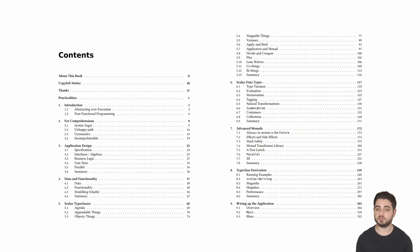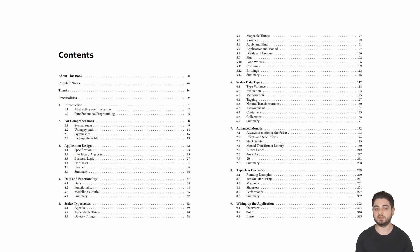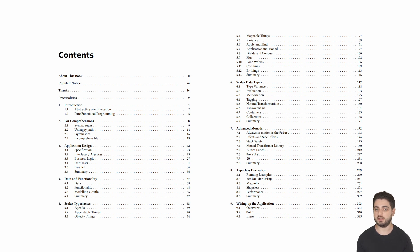The ninth and last chapter attempts to put everything learned so far together in order to finish the application studied many chapters before. It uses HTTP4S and Blaze for that. And that's pretty much all there is about the content, apart from the typeclass cheat sheet at the very end.